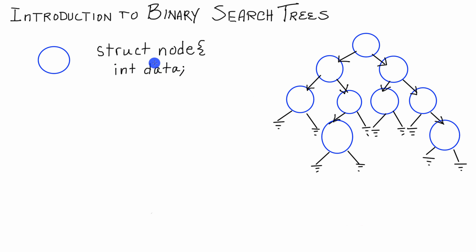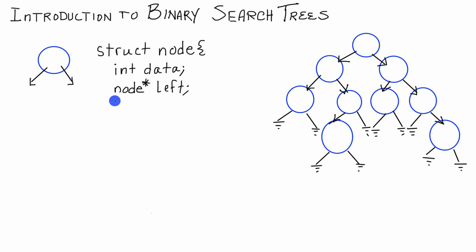Now our nodes have the ability to hold some data. The next thing we want is for our nodes to be able to point to two other nodes in the tree, so we need to create two pointers. Inside the struct definition, we type node star and name the first one left. For the second node pointer, we type node star — node star is the variable type for a node pointer — and name it right. We end the struct with a curly brace and semicolon. Now we have defined our binary search tree node, which can hold data and point to two other nodes via its left and right pointers.